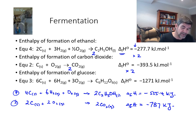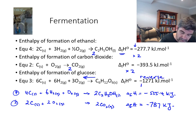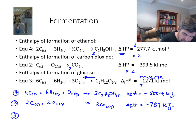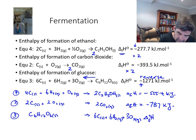Our final equation is the enthalpy of formation of glucose. This is okay with one small problem: it is in the wrong direction. So we actually need to reverse equation 3, and of course when we reverse equation 3 we're also going to have to reverse the sign. So for equation 3 written the other way around: C6H12O6 solid produces 6C solid + 6H2 gas + 3O2 gas, and the delta H value is this time plus 1271 kilojoules.